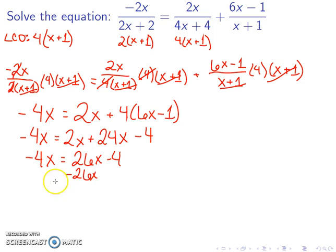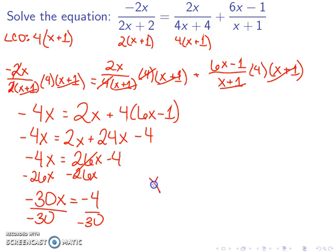I can subtract 26x from both sides to get like terms together. That gives me negative 30x is equal to minus 4. I can then divide by negative 30. This gives me x is 4 over 30, which then reduces to 2 over 15.